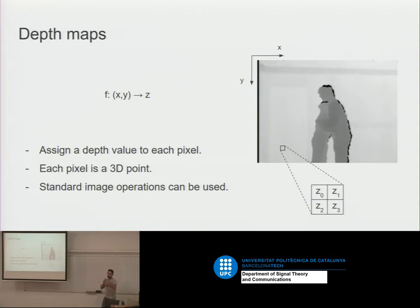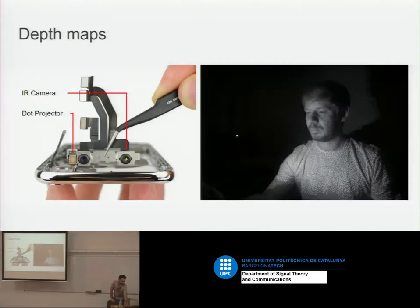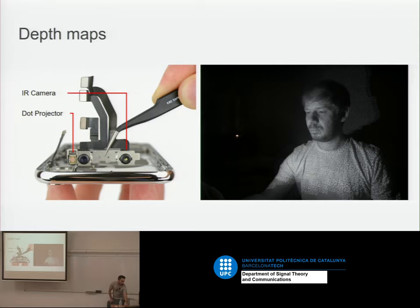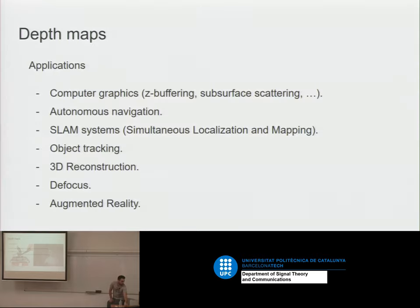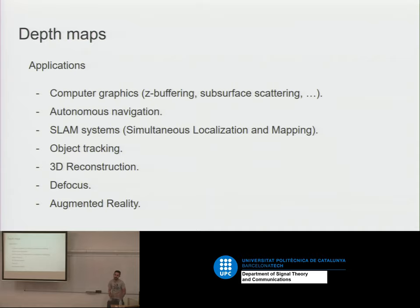The problem is that with depth maps we can only represent surfaces. Unless we integrate many of them, we only have a surface — I can only go to a certain depth point. Depth maps have been quite cheap to acquire since we got the Kinect sensor about 10 years ago. They are noisy, but we can work with them and they are useful for many applications: rendering, graphics, SLAM systems, reconstruction. It's a very useful representation.